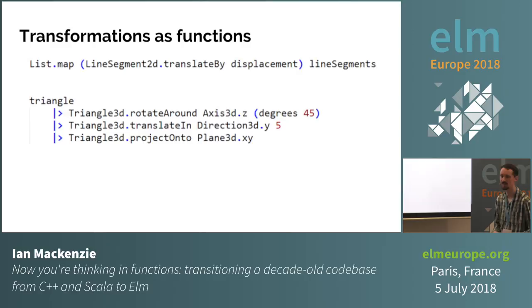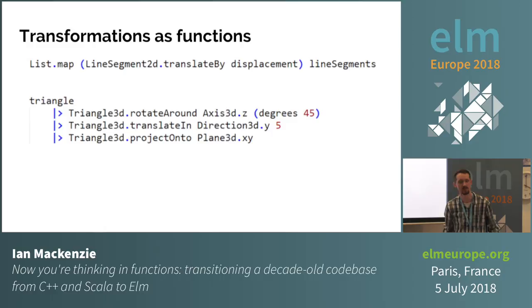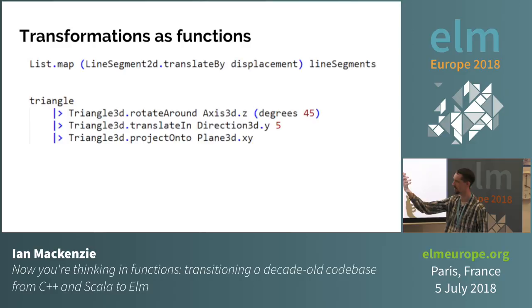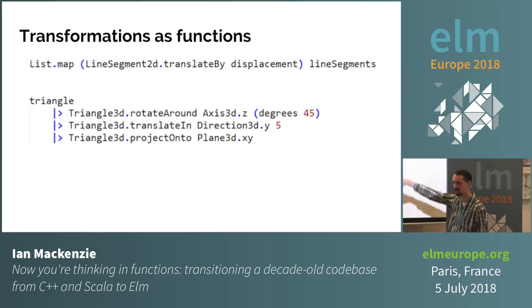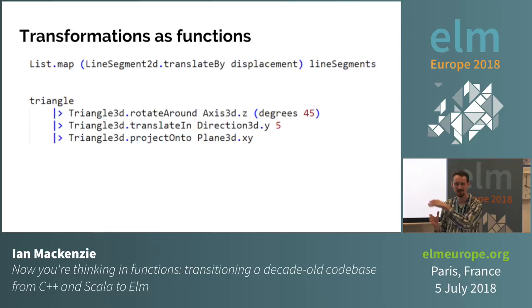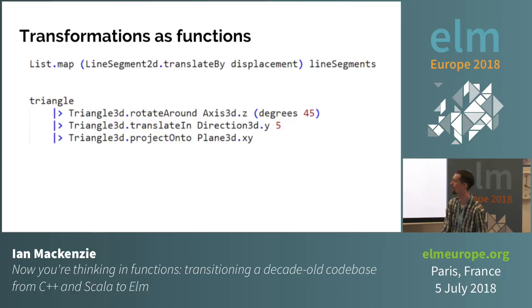This works out really well because Elm functions allow partial application, so we can map a translation over a list of line segments to translate all of them at once. We can put them in pipelines: start with the same input triangle, rotate it around the Z axis by 45 degrees, take that triangle and translate it in the Y direction by five units, then project it down onto the XY plane. We've nicely done a whole sequence of transformations all at once. By the way, if you're thinking this is inefficient because there's no way to turn these all into one matrix, there is a nice solution for that — outside the scope of this talk, but happy to discuss afterwards.